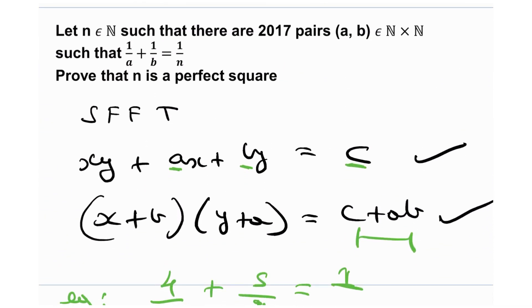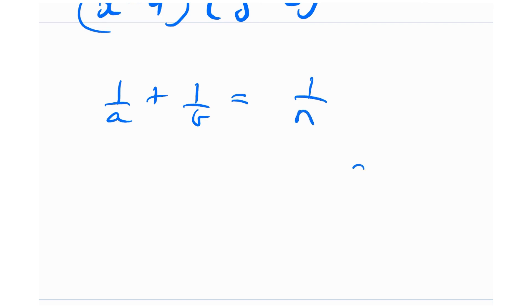Now let's read the actual problem. Let n be a natural number such that there are 2017 pairs (a, b) belonging to the natural numbers with 1/a + 1/b = 1/n. So a, b, and n are all natural numbers, there are 2017 solutions to this equation, and we need to prove that n is a perfect square.